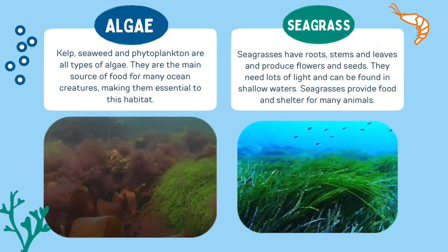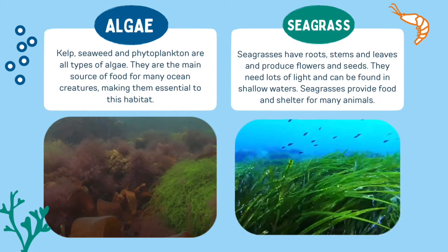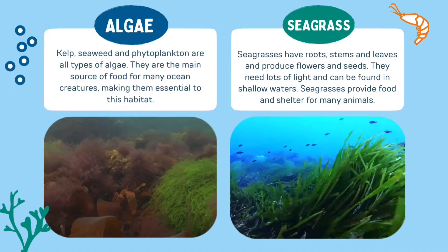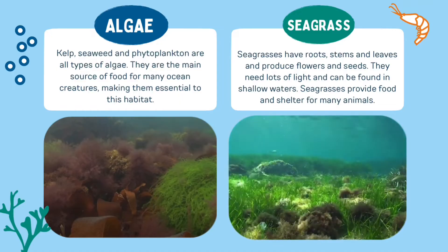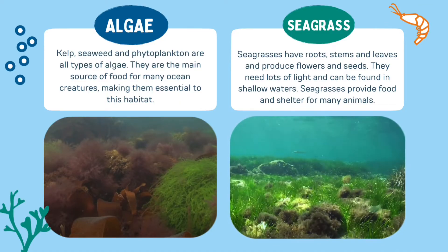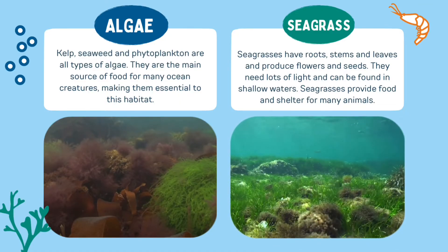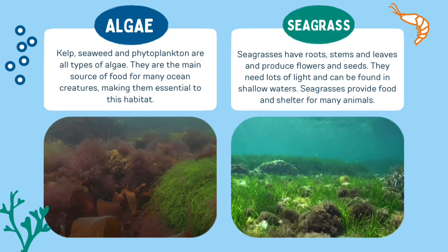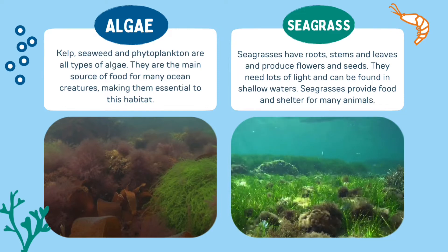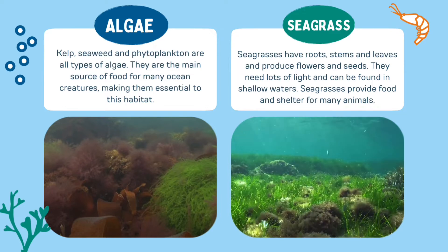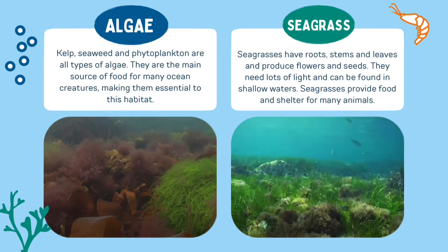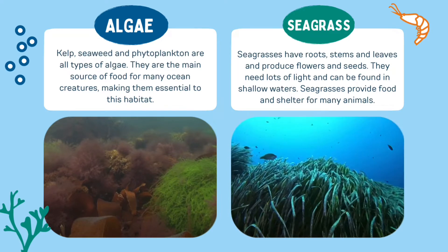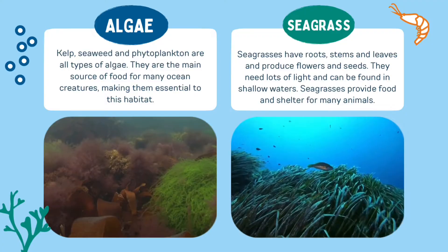Then there's seagrass. Seagrasses have roots, stems and leaves, and produce flowers and seeds. They need lots of light and can be found in shallow waters. Seagrasses provide food and shelter for many animals.